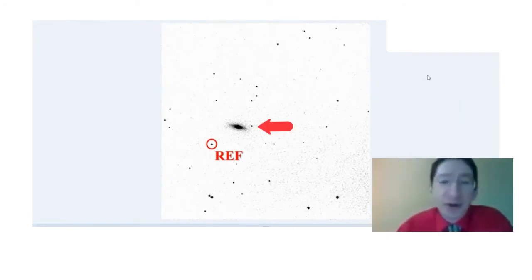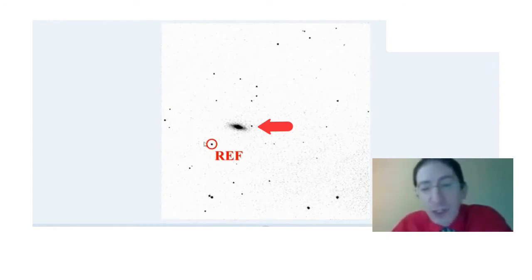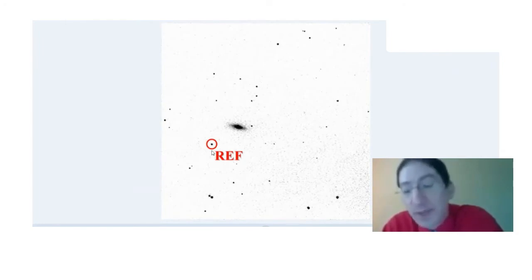Now in the finder chart, you can see the galaxy, and you can see which star we've marked to be the reference star. The question is, which point of light in this image is the supernova? We have not marked that. In this exercise, you're going to find out which one is the supernova using the same technique that we had to use to figure it out, and that's a process called image differencing.